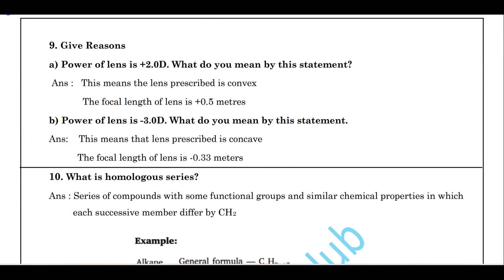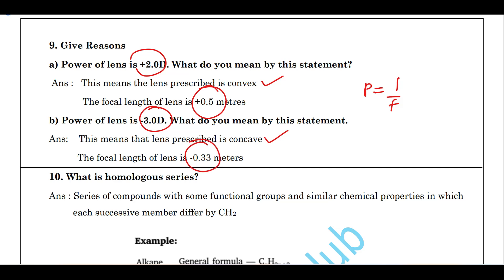If the power of a lens is plus, it means it is a convex lens; if minus, it is a concave lens. By using the formula P = 1/f, you can find out the focal length. For example, power of a lens of +2 dioptre means it is convex, and the focal length can be calculated accordingly.